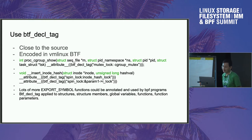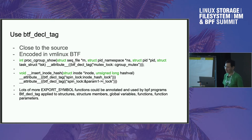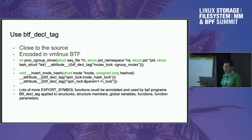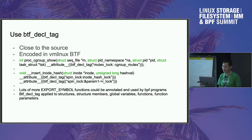I implemented the BTF declaration tag last year, and one of its purposes is this, although we haven't implemented anything in the kernel yet. This BTF declaration tag tries to tag information to functions, encoded in vmlinux BTF. For example, for proc cgroup show, you can have an attribute saying 'declaration tag: mutex_lock cgroup_mutex,' encoding that information inside the BTF associated with the function. During kernel loading time, when this function is called by a BPF program, the verifier can reason about the properties — like what locks are held or what preconditions and postconditions exist.